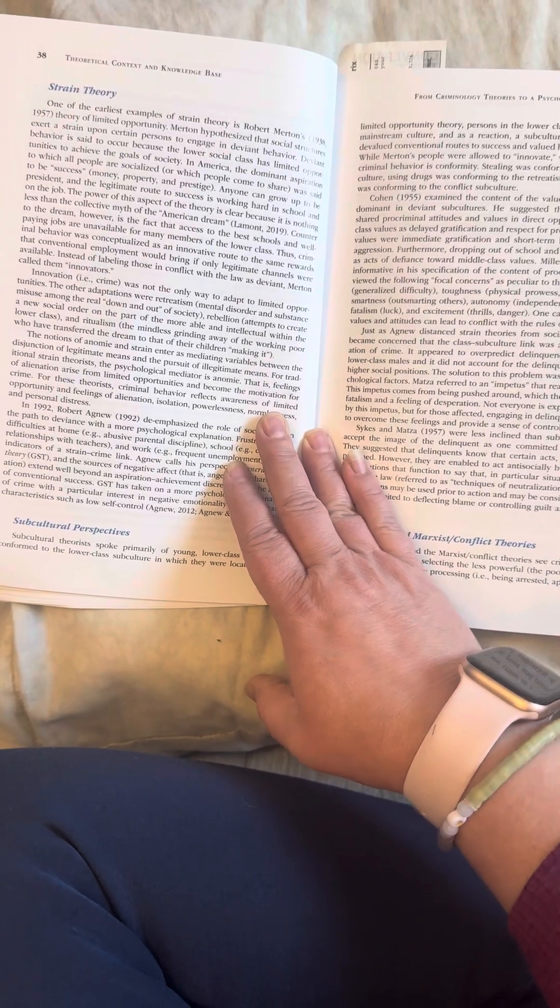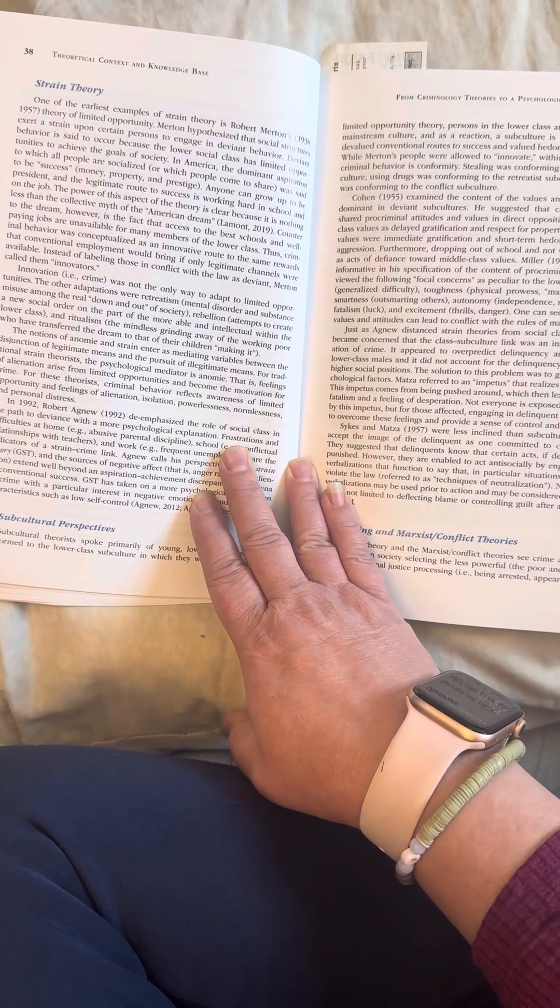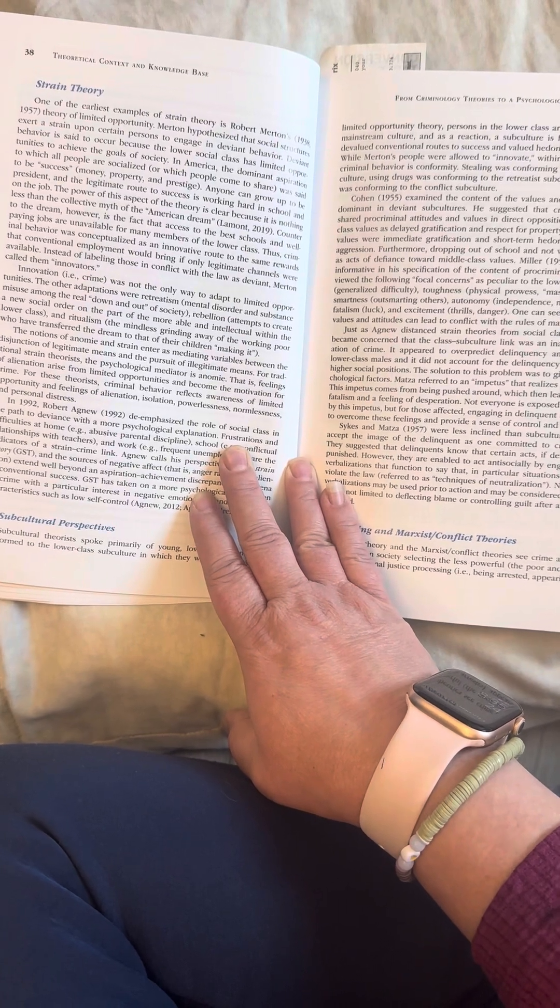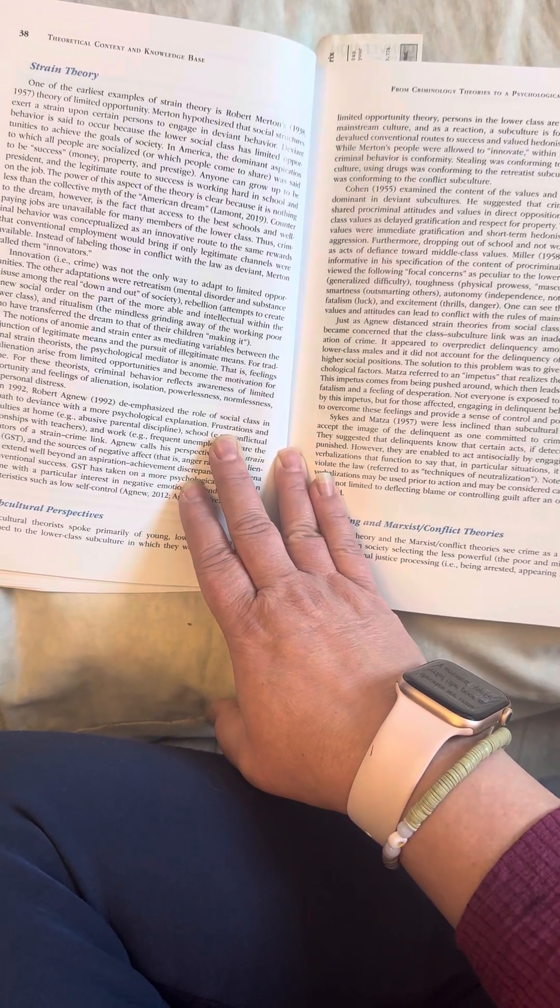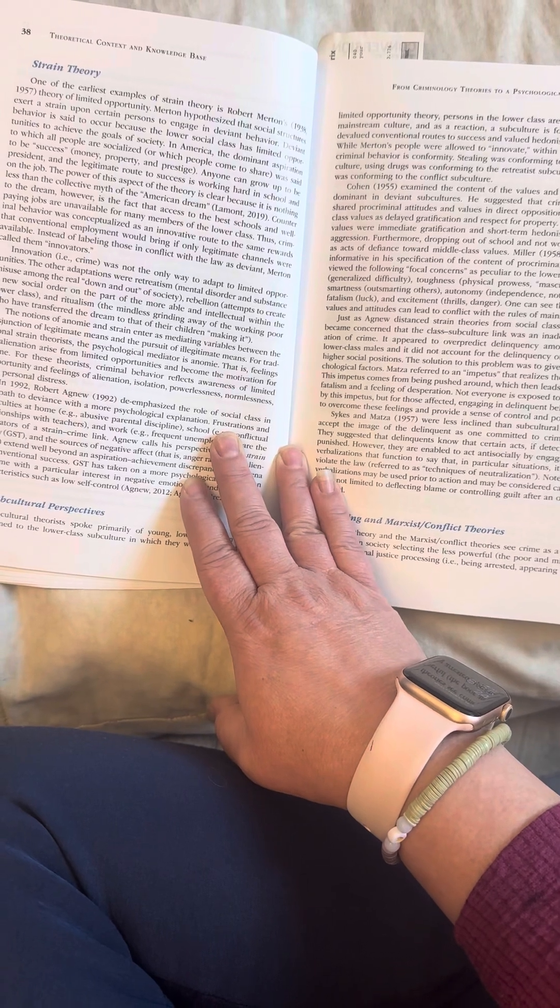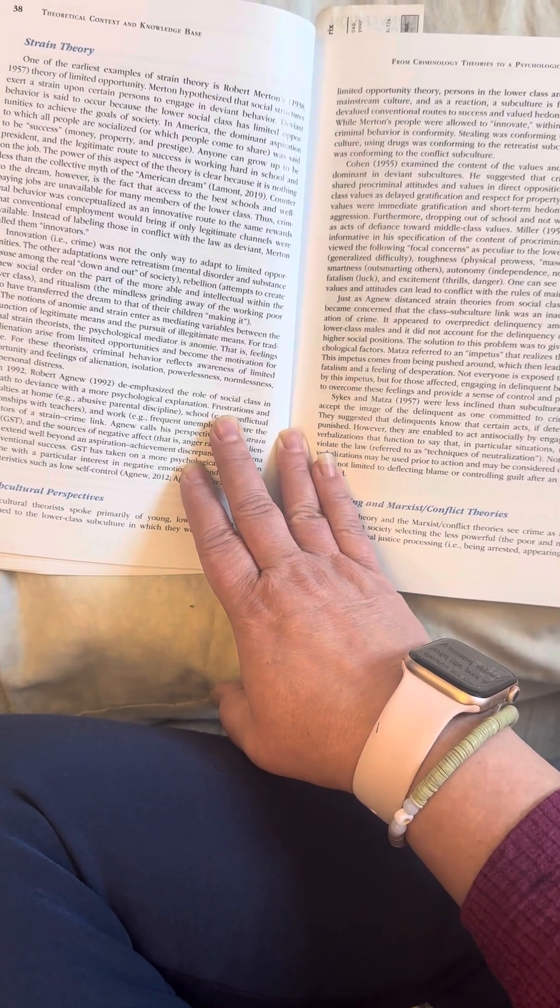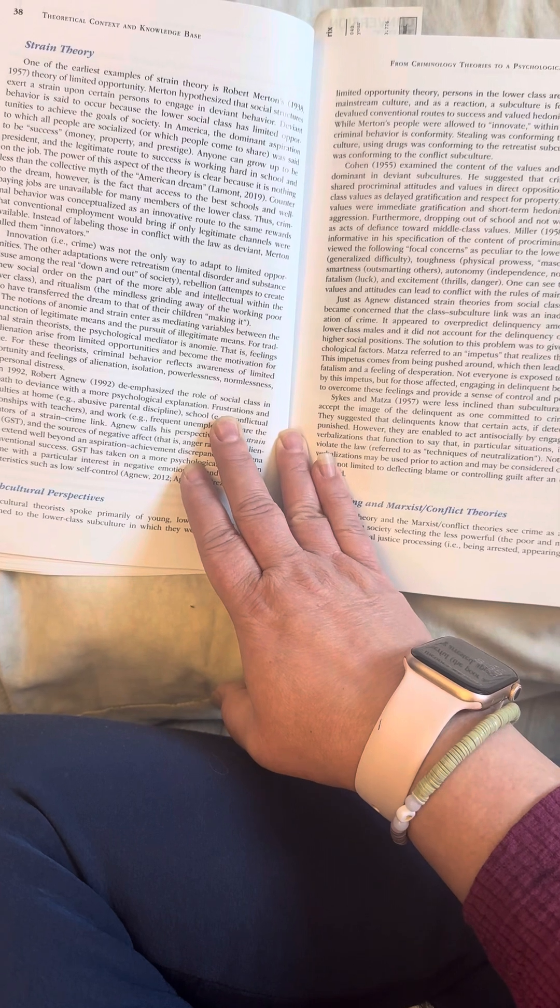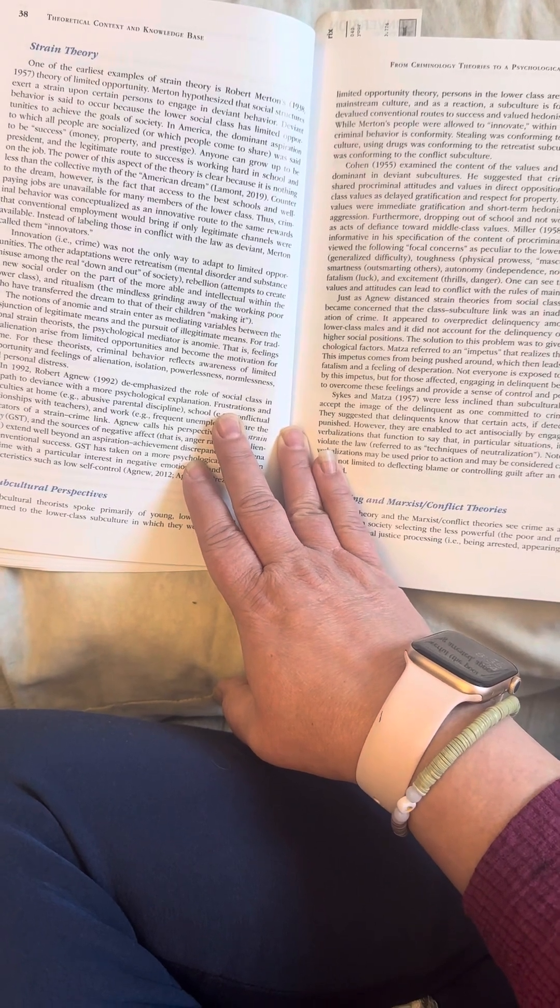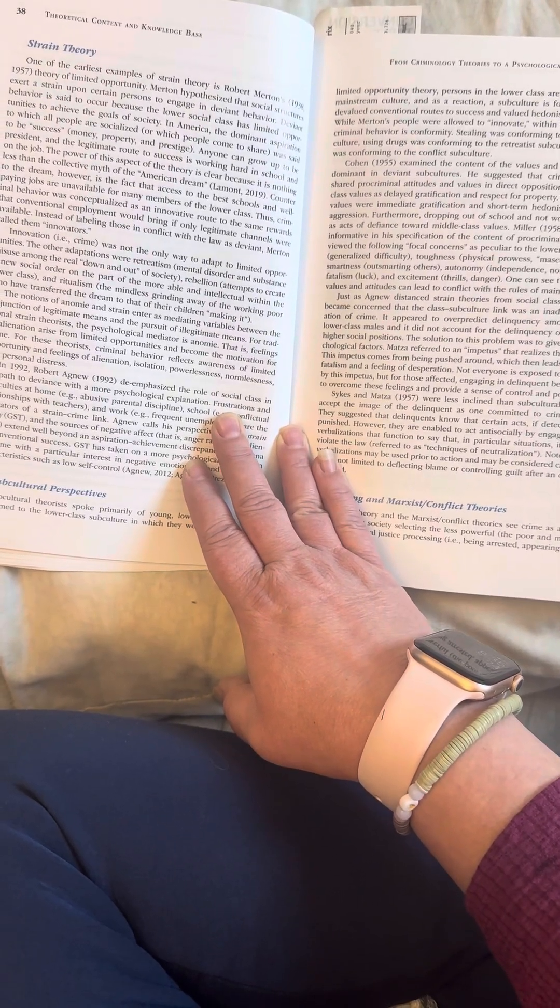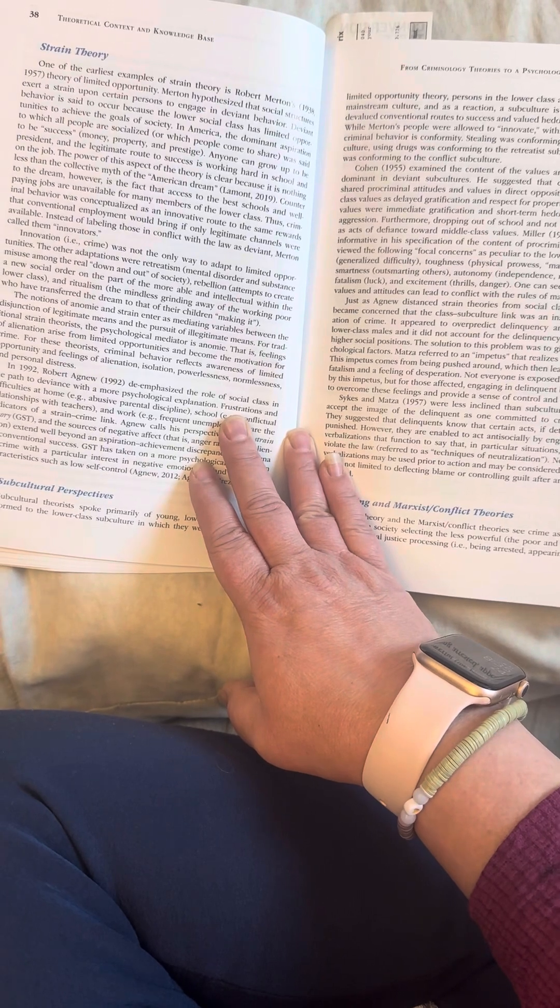Thus, criminal behavior was conceptualized as an innovative route to the same rewards that conventional employment would bring if only legitimate channels were available. Instead of labeling those in conflict with the law as deviant, Merton called them innovators. Innovation was not the only way to adapt to limited opportunities. The other adaptations were retreatism, mental disorder and substance misuse among the real down and outs of society. Rebellion attempts to create a new social order on the part of the more able and intellectual within the poor lower class and ritualism. The mindless, grinding way of the working poor who had transferred the dream to that of their children making it.